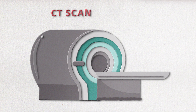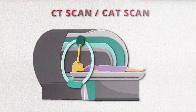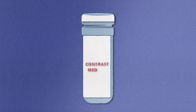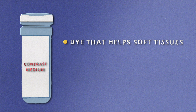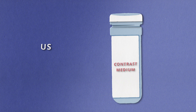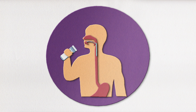However, for more complex medical issues, a more extensive look beneath the skin might be needed. This is where CT scans — otherwise called CAT scans — come in. CT scans use rotating x-ray machines to capture different cross sections of an area. CT scans can accurately image soft tissues in a way that conventional x-rays can't, but this is mostly due to what we call the contrast medium — a dye that helps soft tissues appear more clearly, which can either be injected or ingested. They are used when doctors need a more detailed view of body structures, for example in the case of traumatic injury, when a doctor needs to assess the extent of tissue damage.